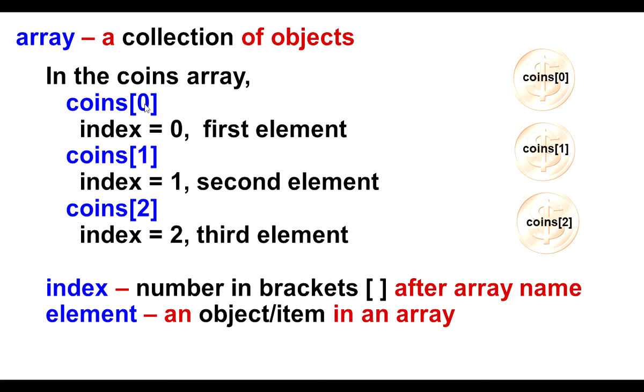Now the index is the number written inside the brackets. It goes after the array name and tells us what element we're referring to. Coins 0 is the first element. Coins 1 is the second element and coins 2 is the third element.